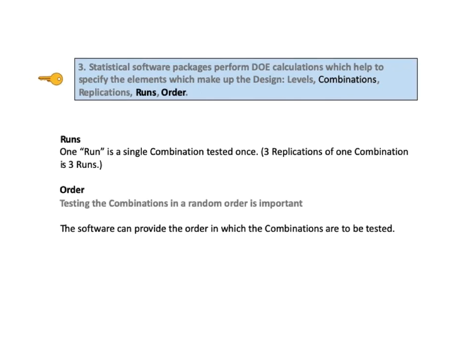Runs and order are the other two elements of the design. One run is a single combination tested once, so three replications of one combination would comprise three runs. Order refers to testing the combinations in a random order, which is very important. The software can provide the order in which the combinations are to be tested.